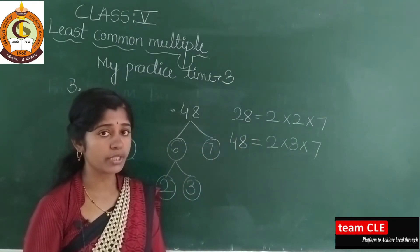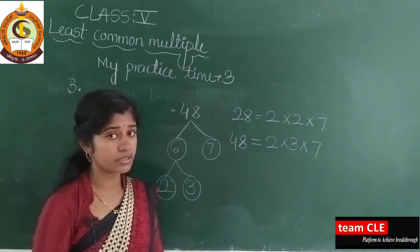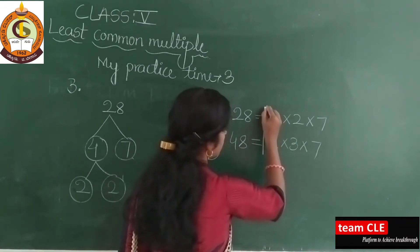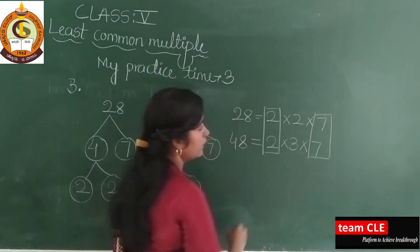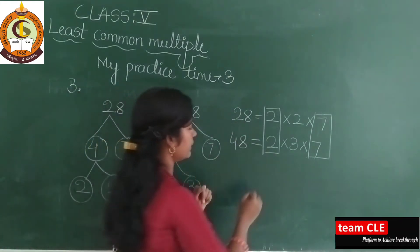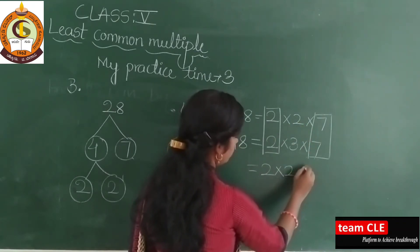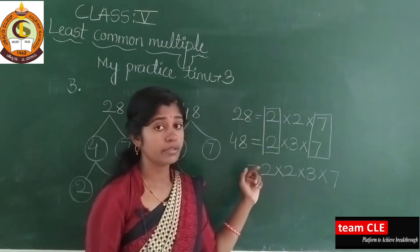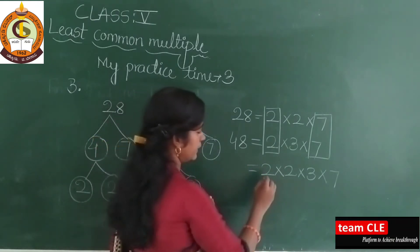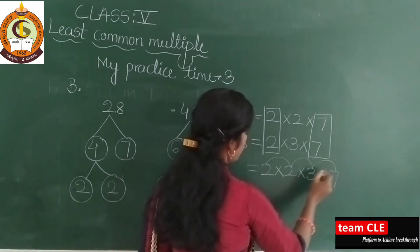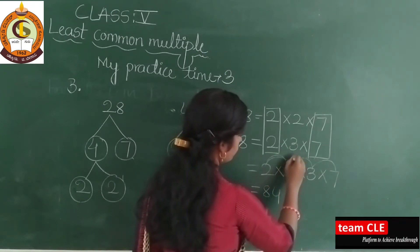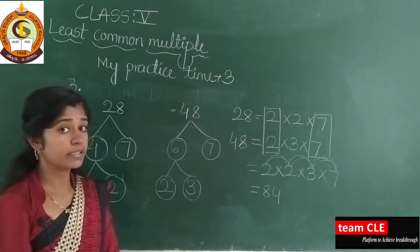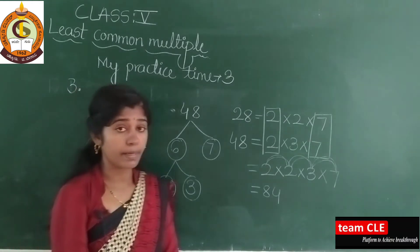Then what is the next step? You need to check the common numbers — the common prime factors. Common means the number should appear on both sides: it should be in the factors of 28 and also in the factors of 48. Check which are common: this 2 and this 7. The common factors you take only 1 time. So I will take this 2 only once, then this 2, then this 3, then this 7 once. Now multiply: 2 × 2 = 4, 4 × 3 = 12, 12 × 7 = 84. The LCM of 28 and 48 by prime factorization method is 84.